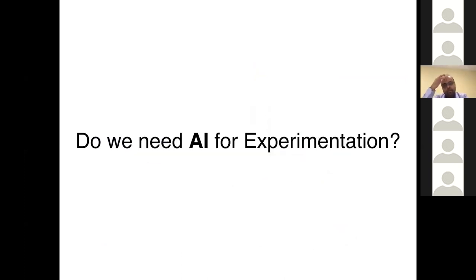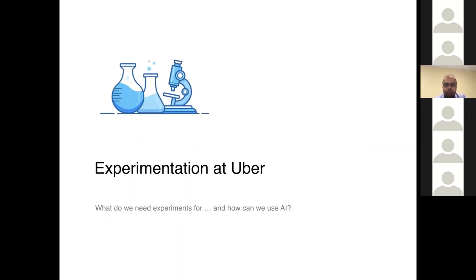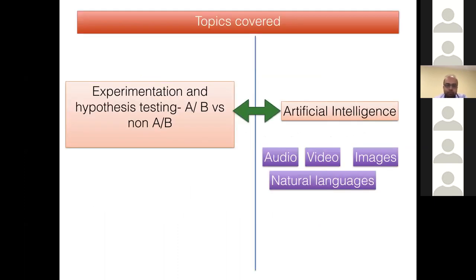Getting back to why we need AI for experimentation — let me briefly explain experimentation in general and at Uber in particular. I'm going to try to bridge the gap between these two seemingly different worlds: the world of artificial intelligence with applications in audio, video, images, and NLP, and the world of experimentation and hypothesis testing. That marriage between the two worlds is what I'm going to cover.